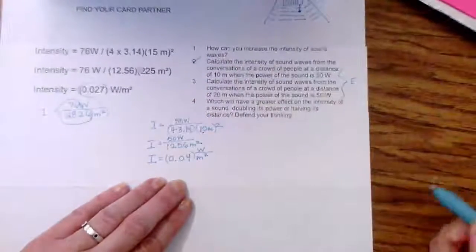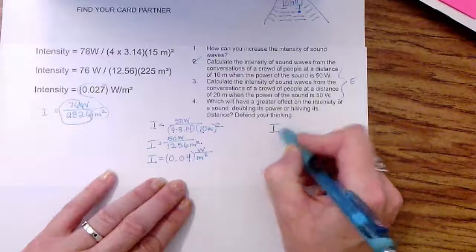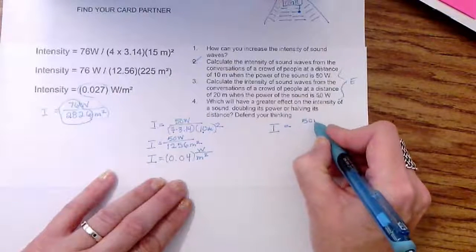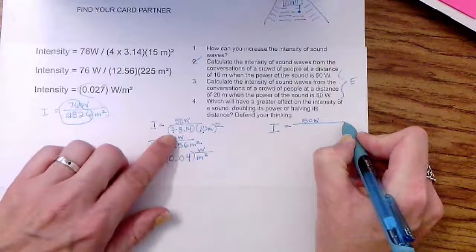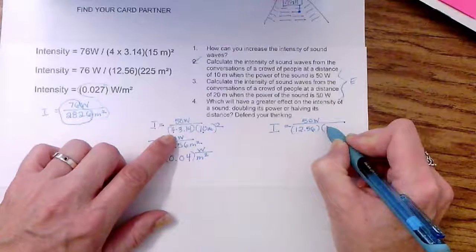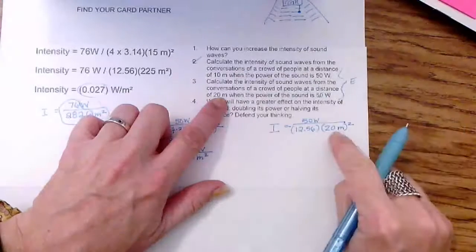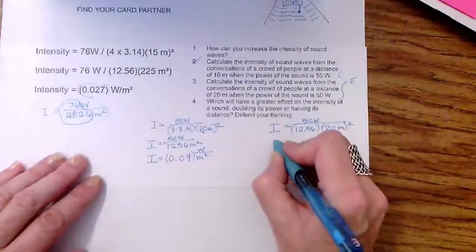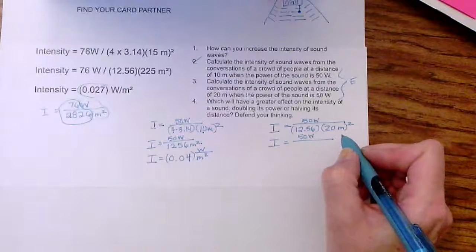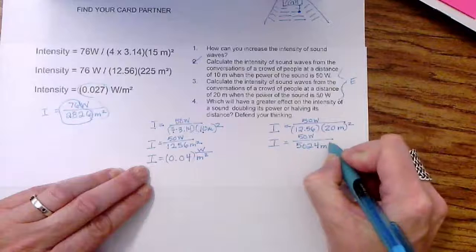And so I know what that looks like. I'm going to try this evidence. This time, I haven't changed the power, but I have changed the distance. So I maintain my power up top as 50 watts. I still use this. And now that I've done it a couple of times, I know for sure that it's going to be 12.56. And I'm multiplying it by 20 meters squared. Now 20 times 20 is 400. So really, when I simplify to this next step, I've got 50 watts over 12.56 times 400, which is 5,024 meters squared.